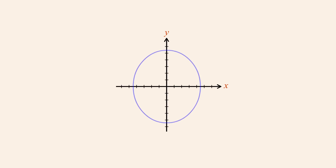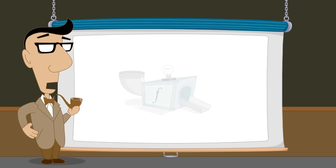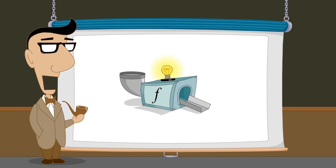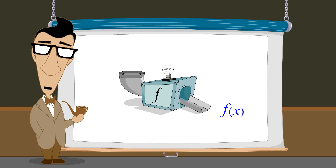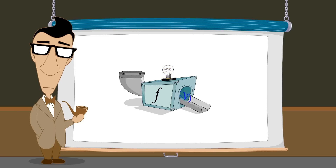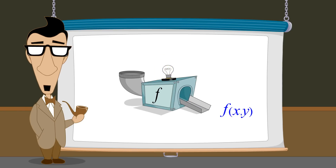Likewise, this curve does not represent the function, but this curve does. So far, we have seen functions which process a single input variable to produce a single output value. In the next lecture, we will introduce functions which process multiple input variables from which they produce a single output value.